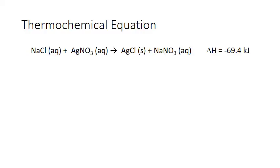Enthalpy can be incorporated into our chemical equations in what we call a thermochemical equation. This reports both the way that the matter changes — in terms of the balanced chemical equation — as well as the way that the energy changes as a result of that process with the enthalpy value. The enthalpy is usually written after the balanced chemical equation. You'll notice that enthalpy here is given only in units of kilojoules — we leave off the moles when it's reported in a thermochemical equation, because the mole is actually represented by the coefficients for each of those substances.